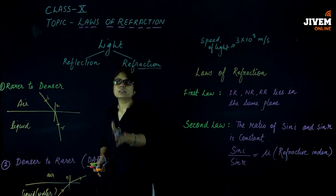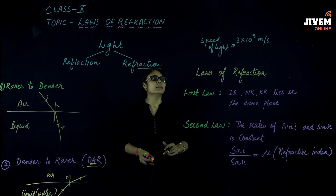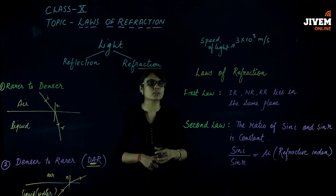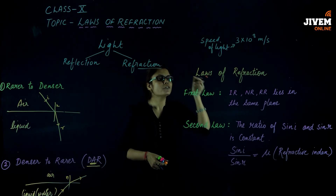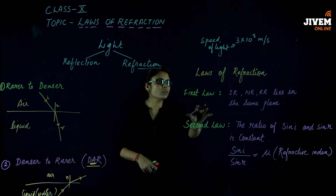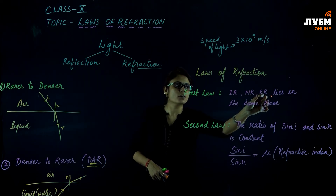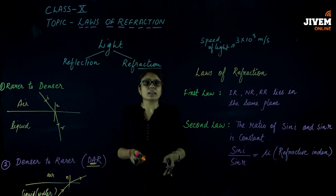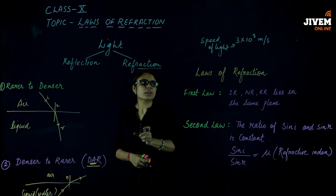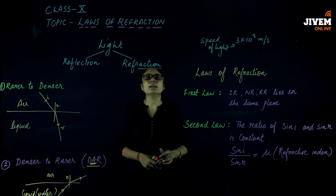These are the two phenomena of refraction. Now, let's come to the laws of refraction. Many students have doubts about this. First law of refraction is exactly the same as in reflection: the incident ray (IR), normal ray (NR), and refracted ray (RR) all lie in the same plane. On a single page, the incident ray, normal ray, and refracted ray all lie within the same medium and same plane.